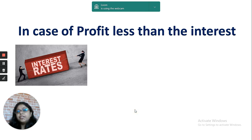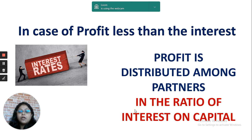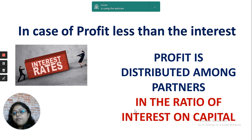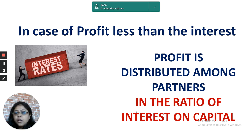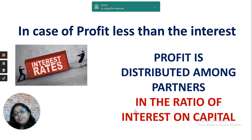But if the profit is less than the interest on capital — for example, if partner A's interest is 2000 and partner B's is 3000, totalling 5000, but the available profit is only 3000 — then the profit is not sufficient. In such a situation, the available 3000 will be distributed in the ratio of their interest on capital, which is 2:3. So the 3000 will be divided between partners A and B in the ratio of 2:3.